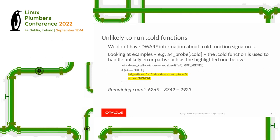What happens with cold functions: if we have a subset of a function that's unlikely to run, it gets moved off to a '.cold' function and we jump to that when those unlikely code portions happen. For example, if an allocation fails, that failure code path gets moved to the '.cold' function. The idea is it improves code locality so everything in the golden path of your code is kept together.